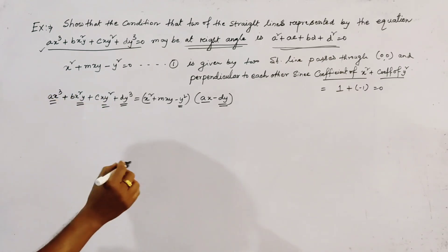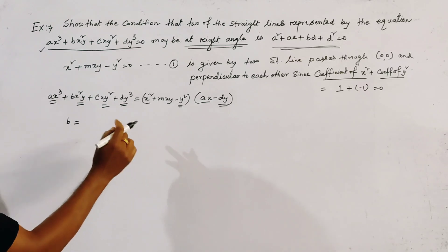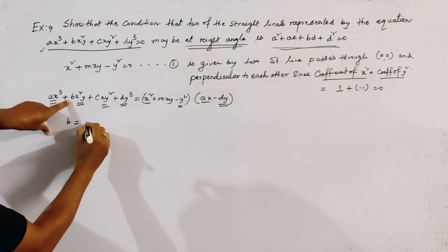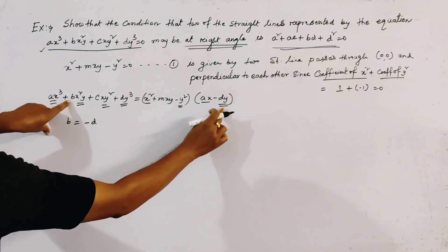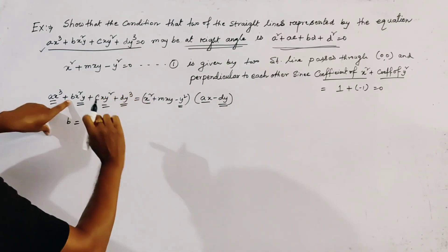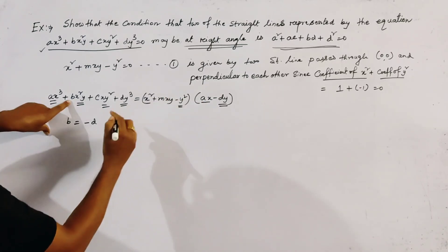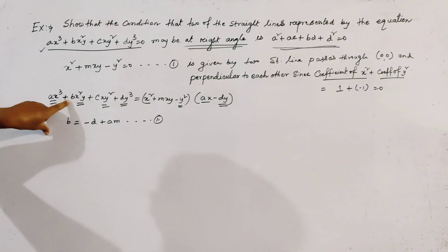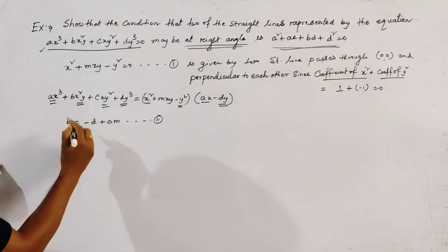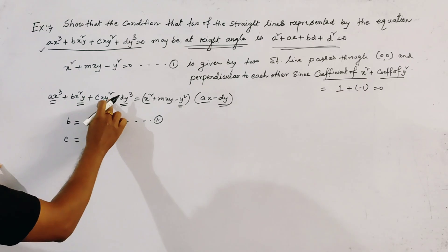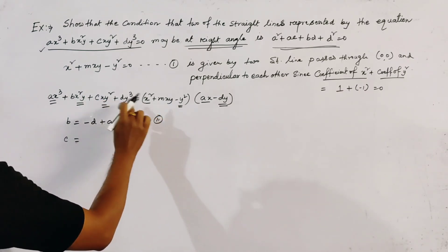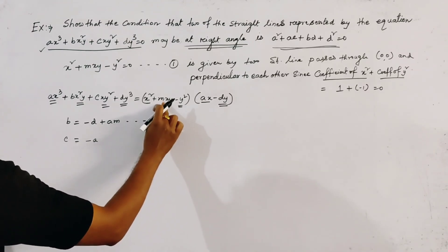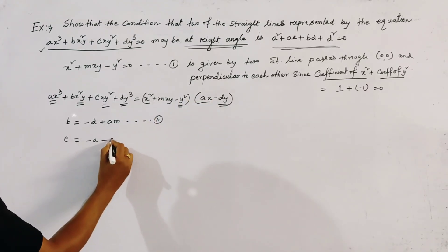Now we equate the coefficients of the remaining terms, x²y and xy². For x²y: b = -d + am, which we call relation 2. For xy²: c = -a + (-d)m = -a - dm, which we call relation 3.